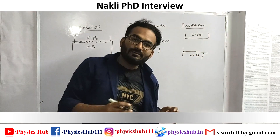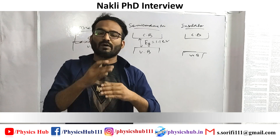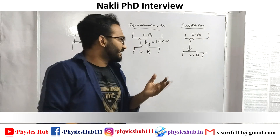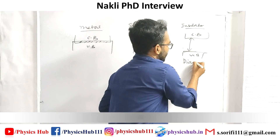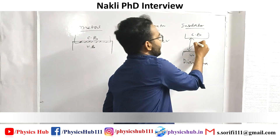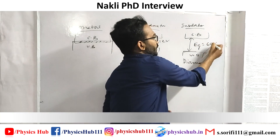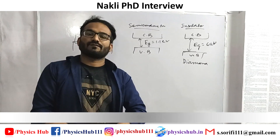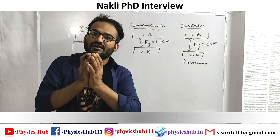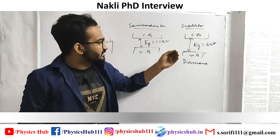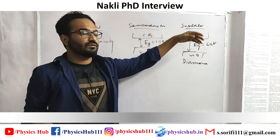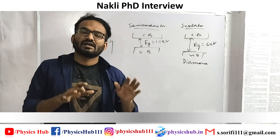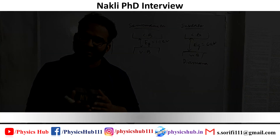In the case of an insulator, the conduction band and valence band are widely apart. For a normal insulator like diamond, the energy band gap is around 6 electron volts. When the band gap is more than 4 electron volts, the material falls into the category of an insulator. It requires a very large amount of energy to move electrons from the valence band to the conduction band, so in general we say that insulators cannot carry any current.